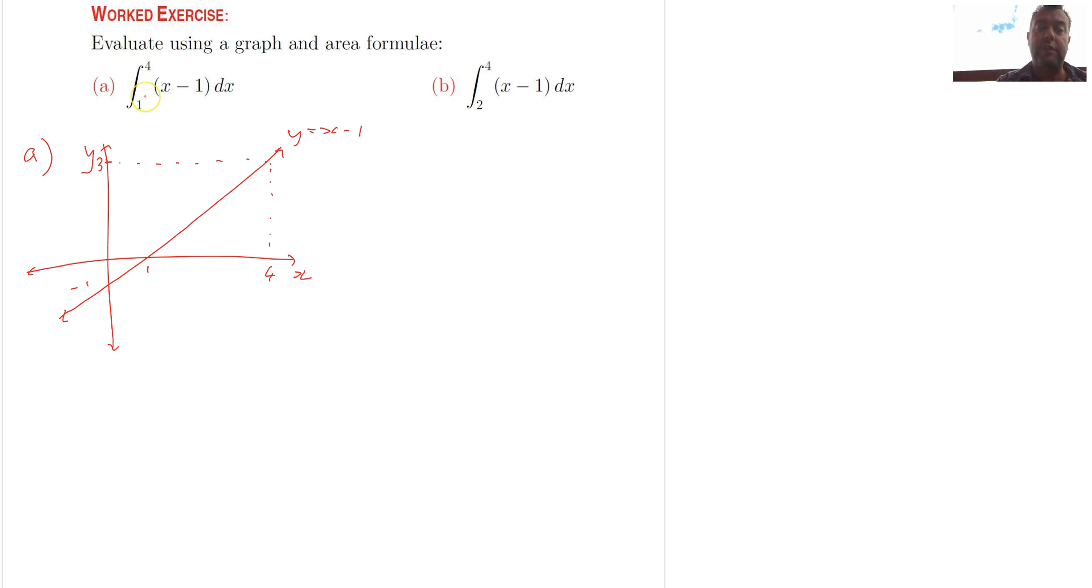We're learning to interpret this as meaning the area underneath this curve, y equals x minus 1, between the bounds of 1 and 4. So we want to find the area between this curve, the x-axis, with respect to x here, between the bounds of 1 and 4.